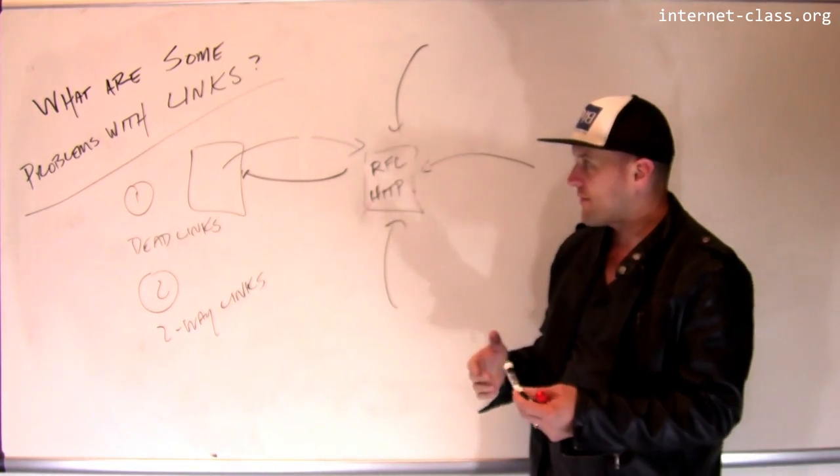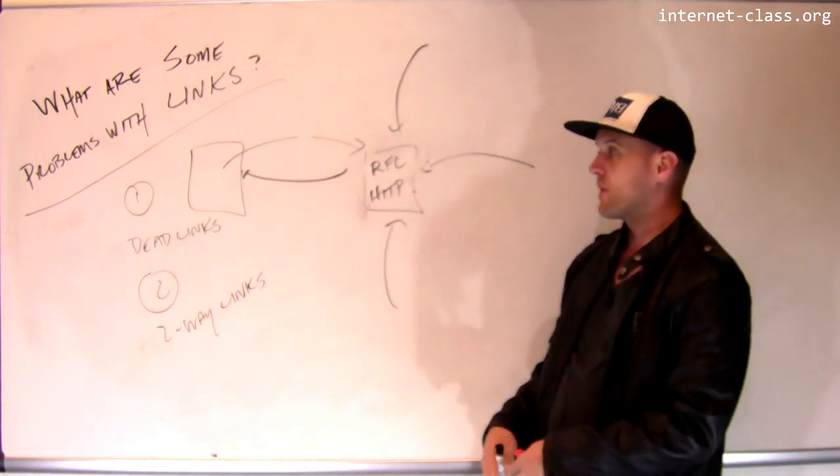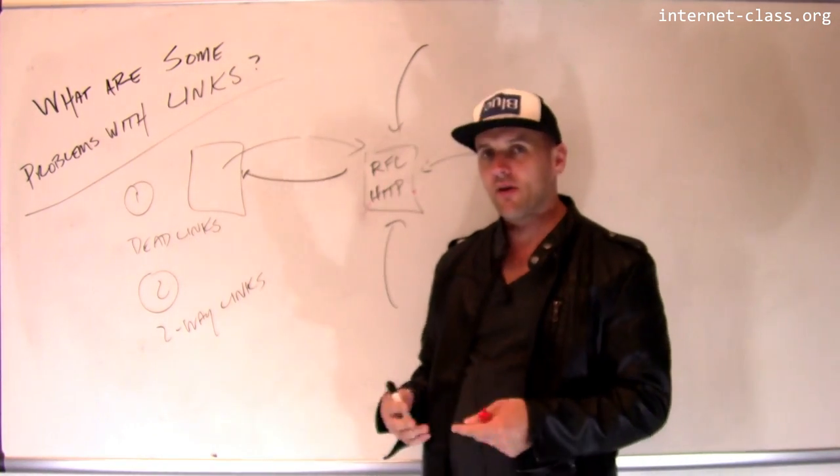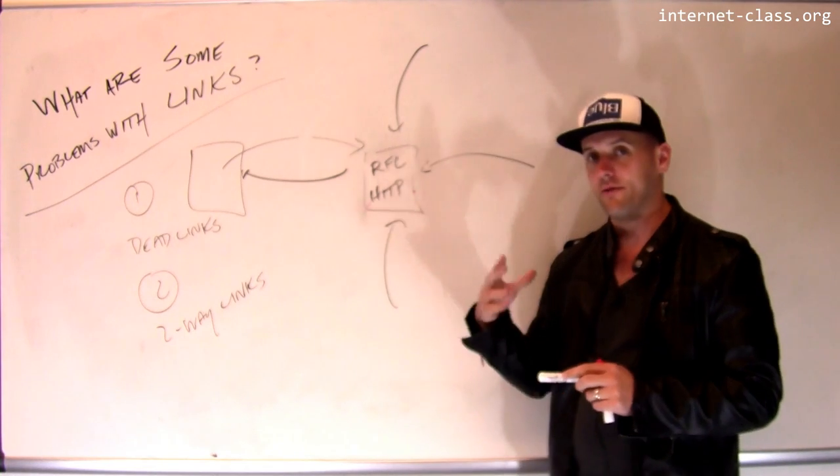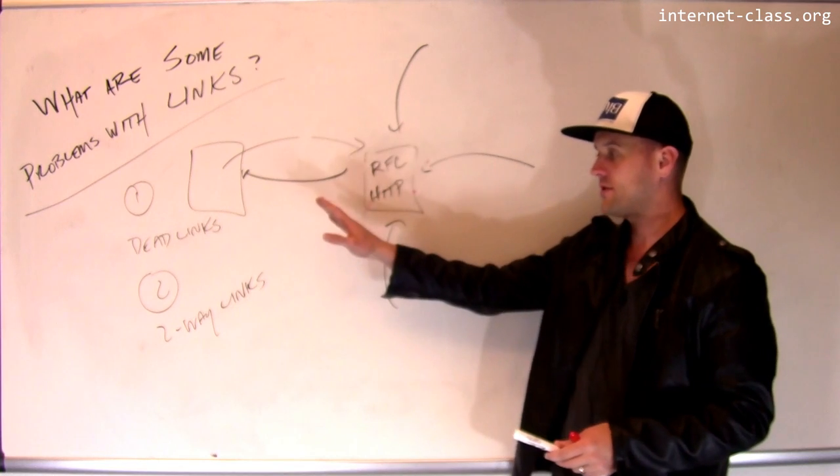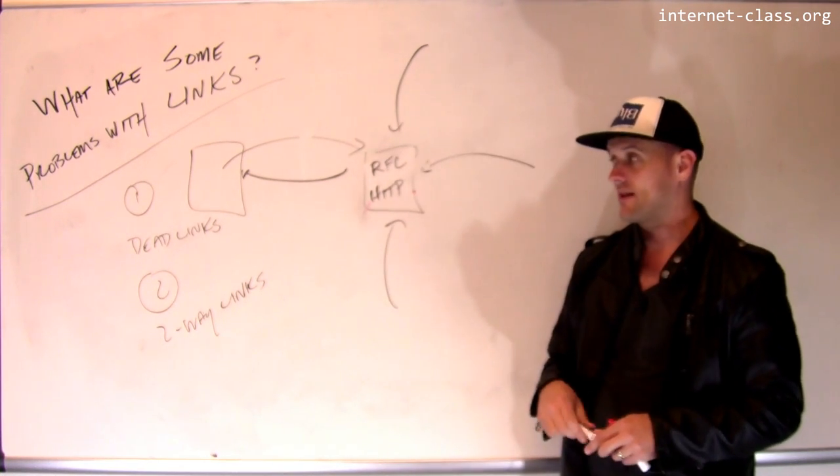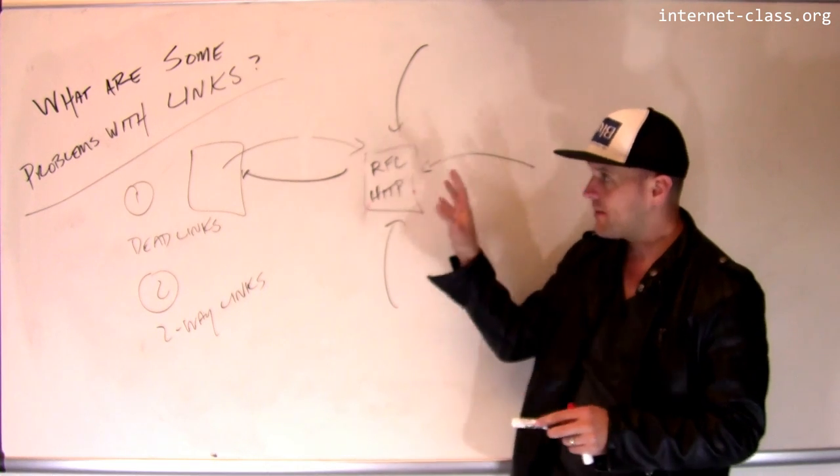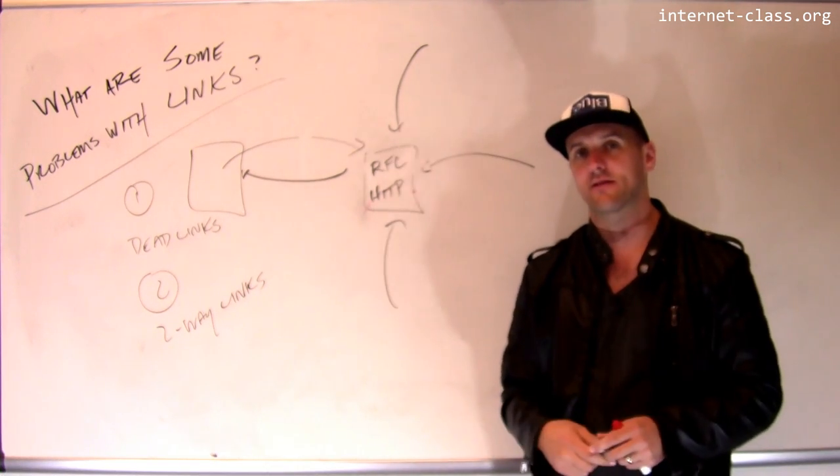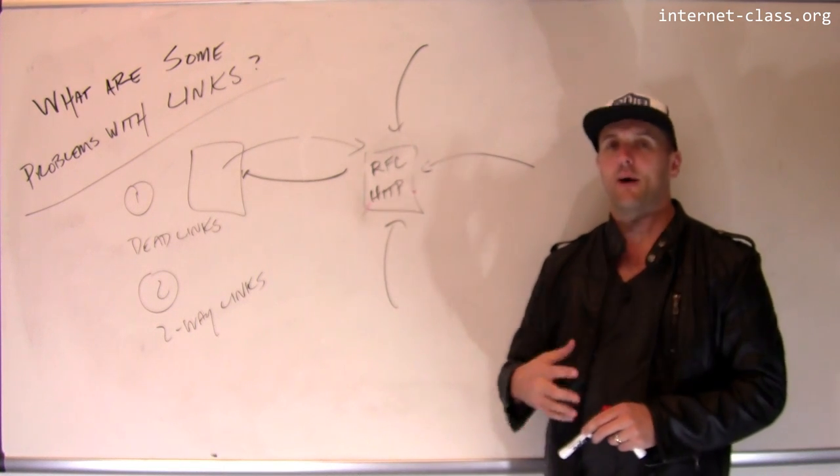But the architecture that we've evolved to on the modern web is very lightweight, doesn't require any sort of central authority. To some degree, I think that expresses some of the spirit of the web. But you can imagine some of the exciting opportunities that would be opened up by the two-way link idea. And of course, being able to deal with dead links is an ongoing problem. So some of the problems with hyperlinks, obviously the system works quite well, allows us to get around the Internet, but it's not without certain limitations.